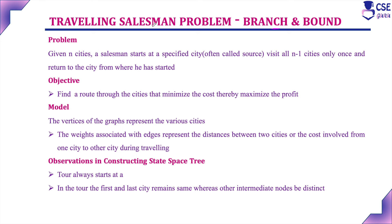The Traveling Salesman Problem we have already discussed under dynamic programming — a link is provided in the description for reference. Given N cities, the salesman starts at a specified source city and has to visit all N minus 1 cities exactly once and return back to the starting city, minimizing the total cost of the tour.